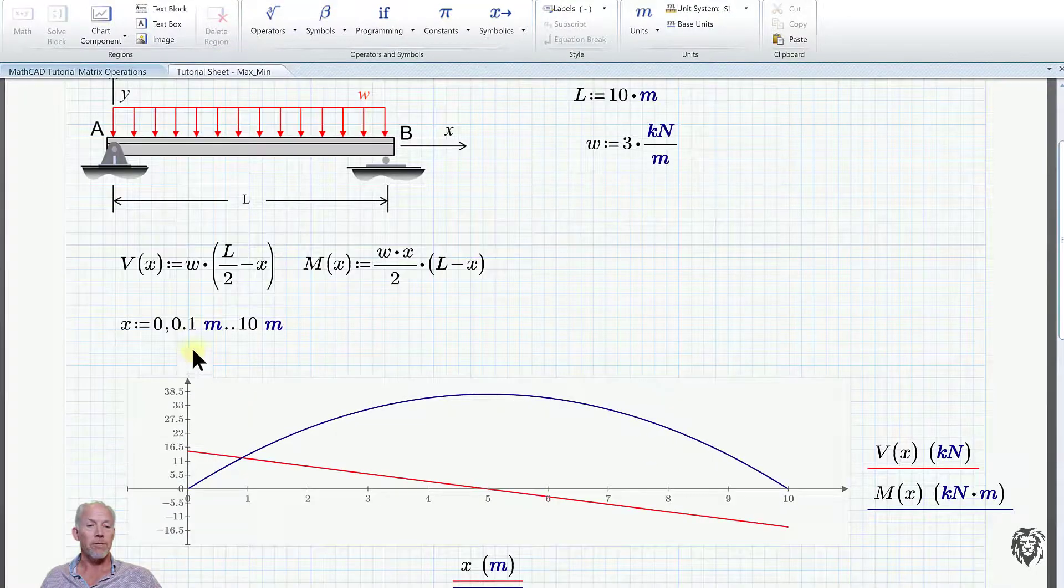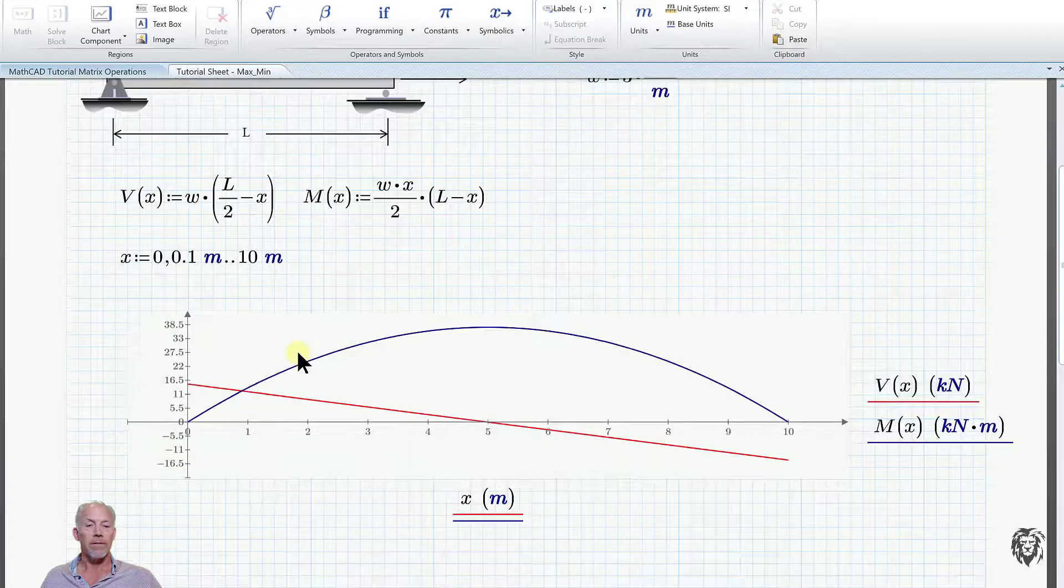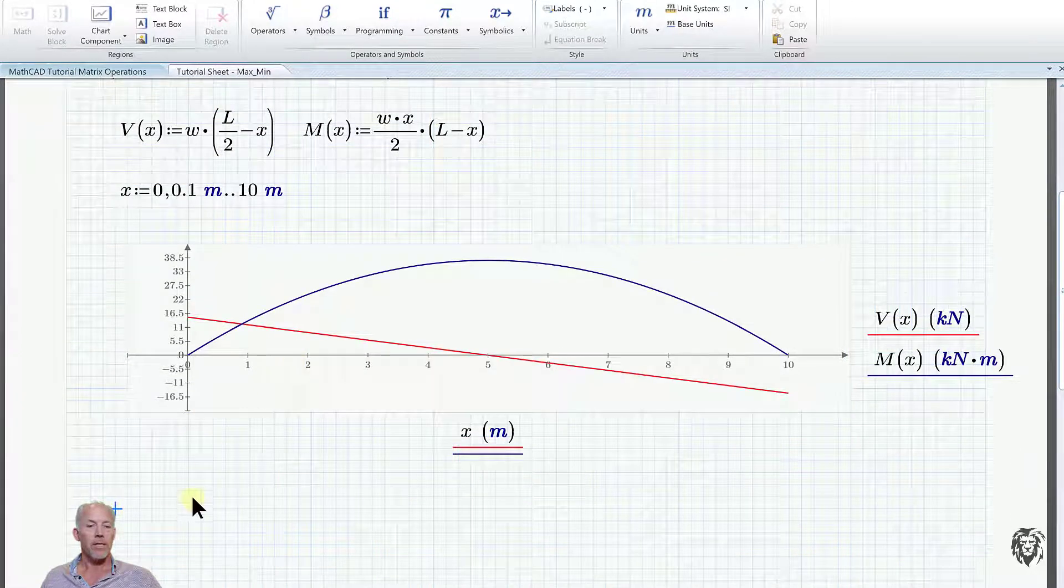Went on, graphed it out, used the same step of 0.1 meters, got a nice smooth curve, and that's about where we needed to be to start this problem. So I'll just leave it sitting right there.